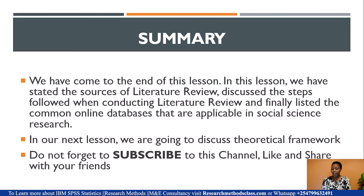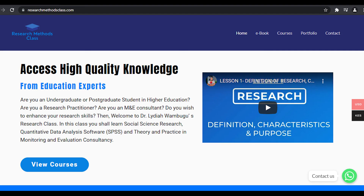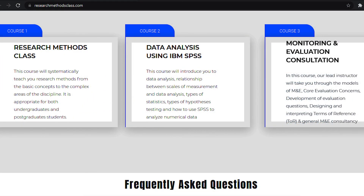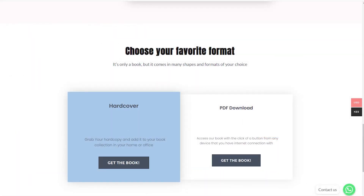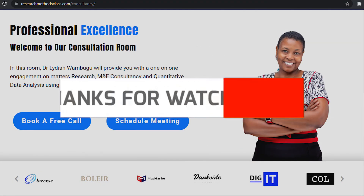That brings us to the end of this lesson. We have stated the three sources of literature review, discussed the five steps followed when conducting literature review, and listed the common online databases applicable in social science research. In our next lesson, we are going to discuss the theoretical framework. Make sure you visit the researchmethodsclass.com website, where you can watch the full research methods course, access courses on SPSS and M&E consultancy, book for consultation, and buy the research methods e-book.